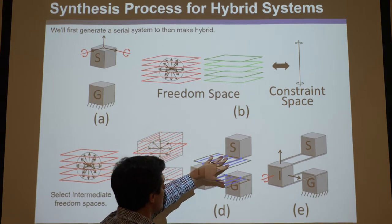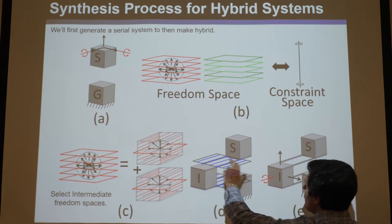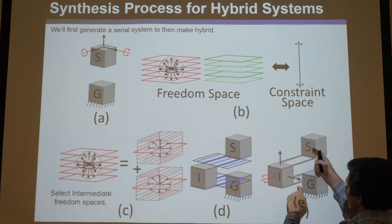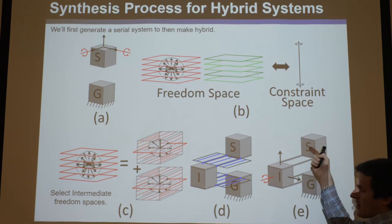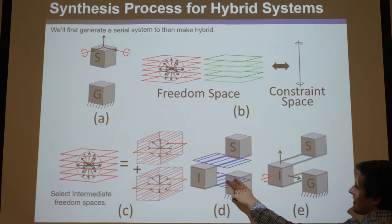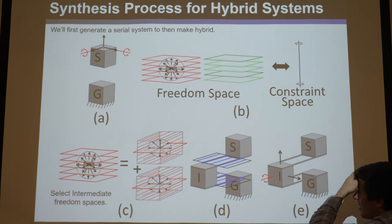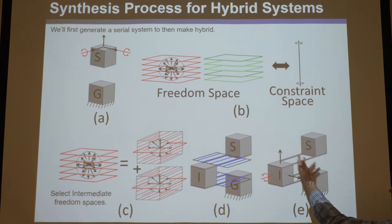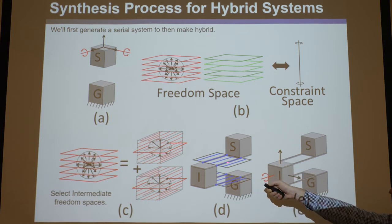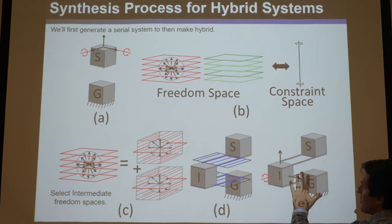Now let's take the constraint spaces of these and synthesize them. Take the first constraint space — it consists of two independent things. We're going to pick two wires. Is this parallel module from stage to intermediate body over-constrained or exactly constrained? It's exactly constrained because there are two things in there and we picked two. Same thing here — we take the constraint space of the one below, pick two, and there are two there. So this is a serial system: took degrees of freedom, found freedom space, broke it into intermediate freedom spaces, used their constraint space within the parallel pyramid, and synthesized them.